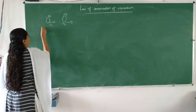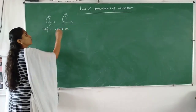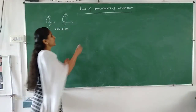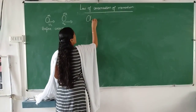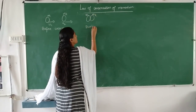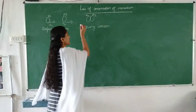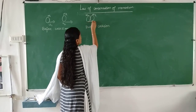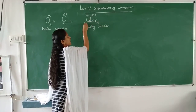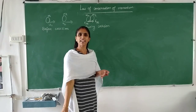Before collision, their velocities are U1 and U2. During collision, M1 accepts a force from M2, written as F21, and the second object accepts a force from the first object, written as F12. After collision, M1 moves with velocity V1 and M2 moves with velocity V2. The collision takes place over a small interval of time T.